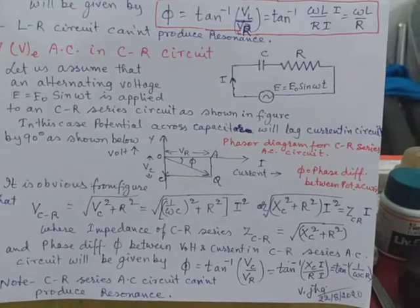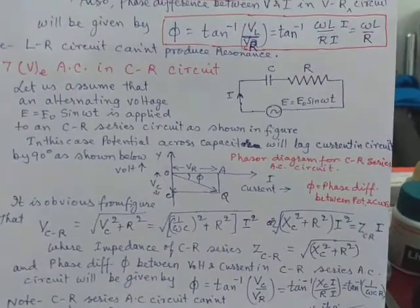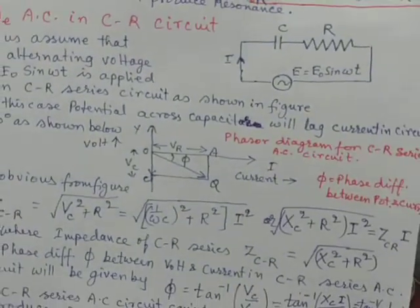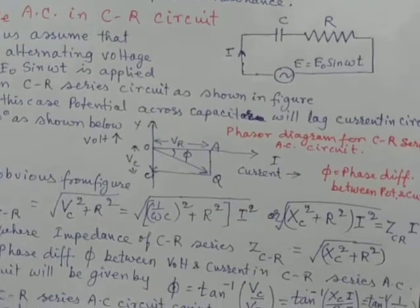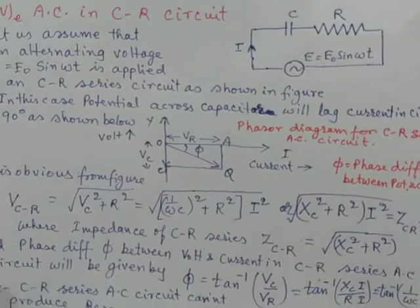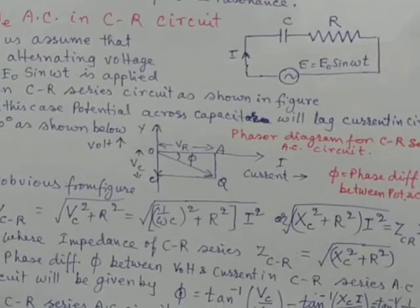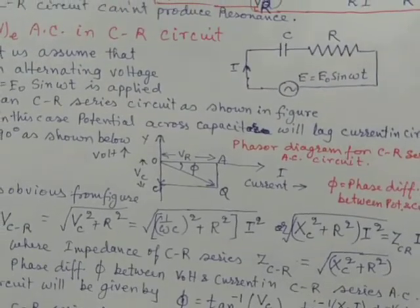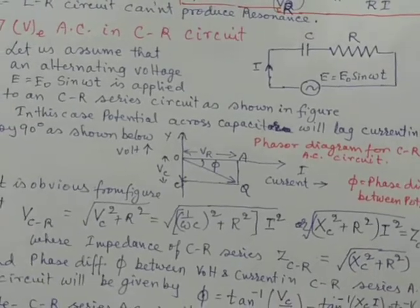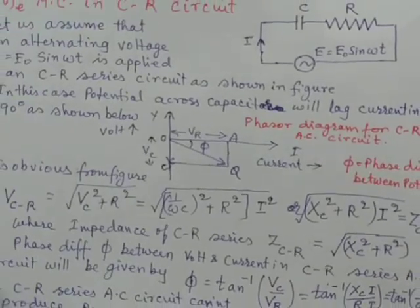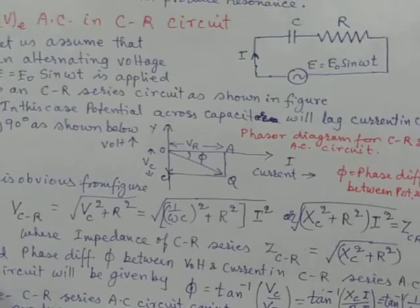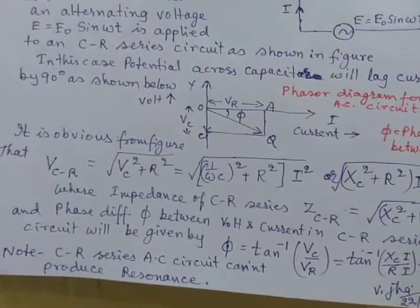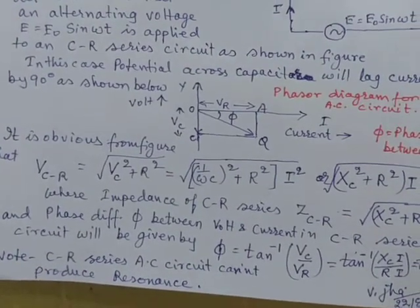we apply the AC current across CR circuit, and in that case, you see that the potential drop across capacitance is along negative y-axis, as shown in the figure, and the potential drop across pure resistance R will be along the x-axis. And as a result, the resultant potential difference across the CR circuit will be along the direction OQ, and hence,